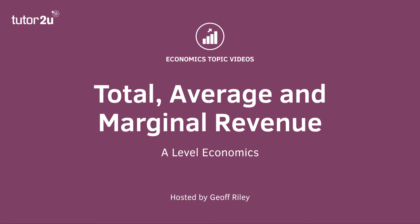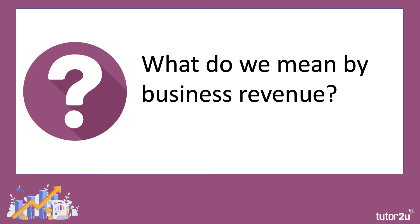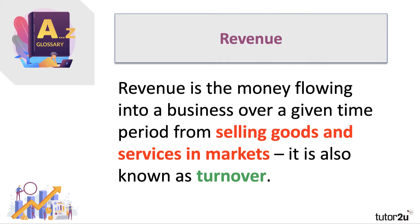Welcome to this micro video where we're going to introduce in a few minutes the three ways in which business revenue can be measured: total, average, and marginal revenue. A quick recap — what do we mean by business revenue? It's the income that flows to a business over a given time period, be it a month, a quarter, or perhaps a year — the income flowing into a business from selling the goods and services in markets that they have produced.